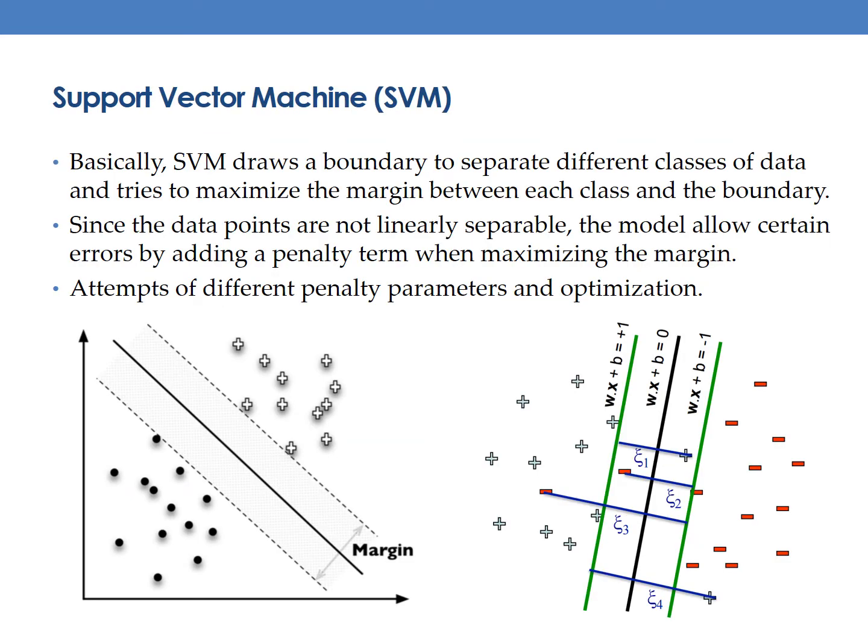The first machine learning algorithm we used is Support Vector Machine. Basically, SVM draws a boundary to separate different classes of data and tries to maximize the margin between each class and the boundary. Since the data points are not linearly separable, the model allows certain errors by adding a penalty term while maximizing the margin. We attempted penalty parameters of 0.1, 0.5, and 1.0, and all the models generate almost the same results.